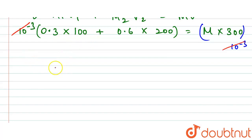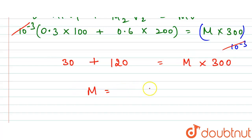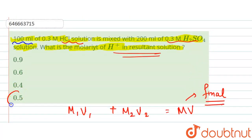Calculating: 0.3 × 100 = 30, and 0.6 × 200 = 120. So 30 + 120 = 150 = M × 300. Therefore, M = 150 / 300 = 0.5 molar. The resulting molarity of H⁺ ions is 0.5 M, which is the required answer.